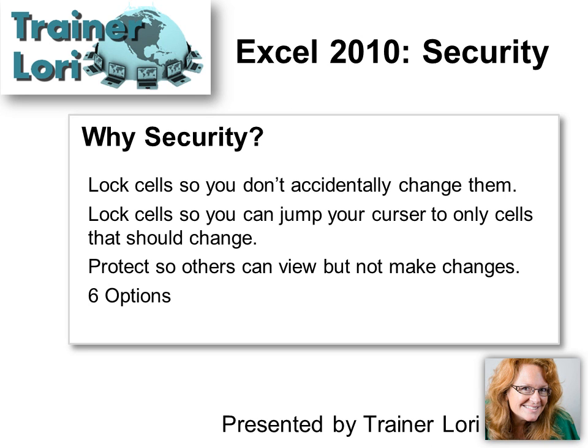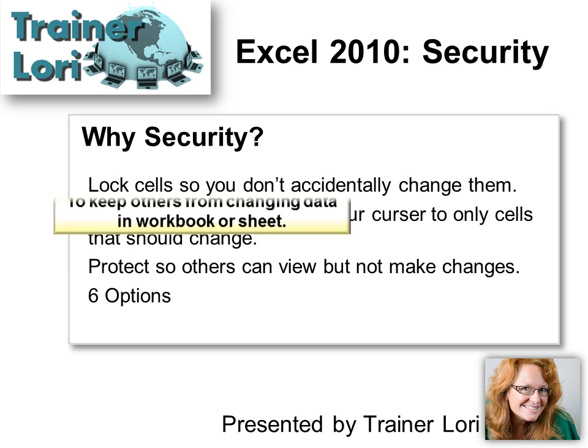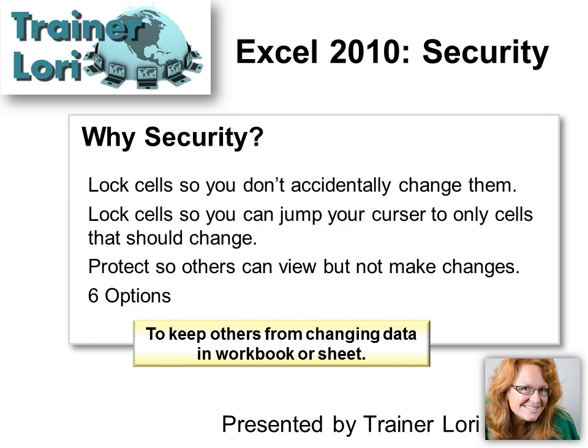Why bother with security in Excel? Sometimes you just want to lock your cells so you don't accidentally change them, but also you want to protect them so other people can't go into cells that you don't want them to go into. You can lock your cells so that your cursor jumps just from cell to cell that you want them to have access to. You can protect it so others can view it but not make changes. There are going to be six options we'll look at today, but essentially it's to keep others from changing data in a workbook or worksheet.